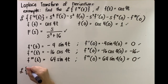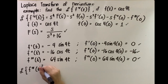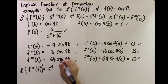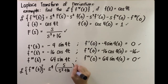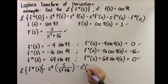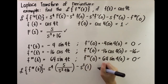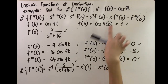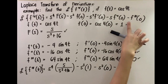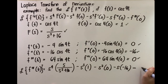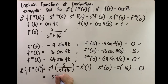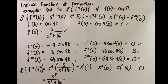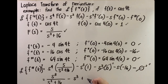Therefore, the Laplace transform of the fourth derivative is: s⁴ times F(s) — where F(s) = s/(s²+16) — minus s³ times f(0) which is 1, minus s² times f′(0) which is 0, minus s times f″(0) which is −16, and minus f‴(0) which is 0. This simplifies to s⁵/(s²+16), minus s³, plus 16s.